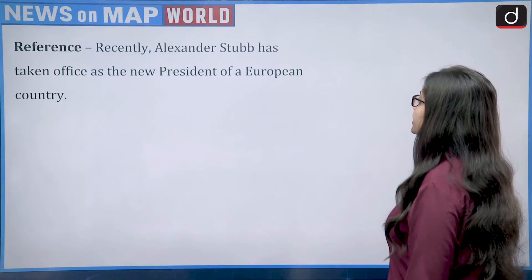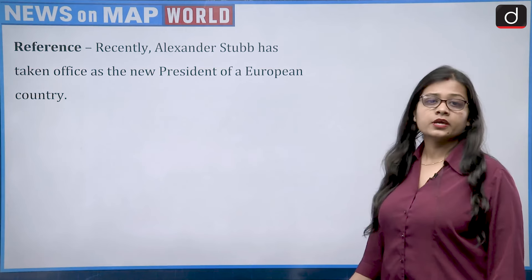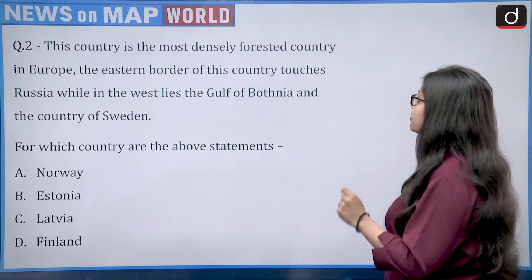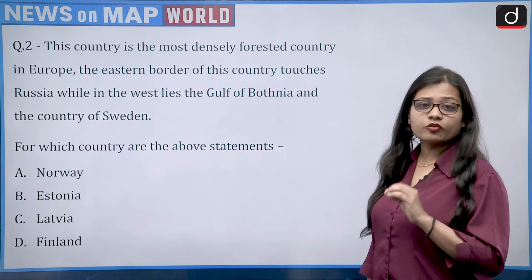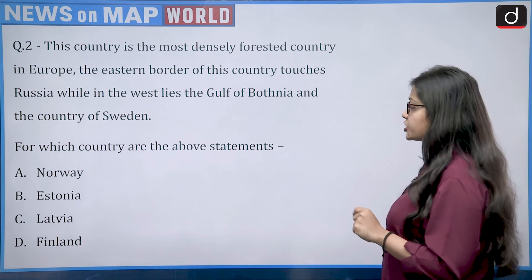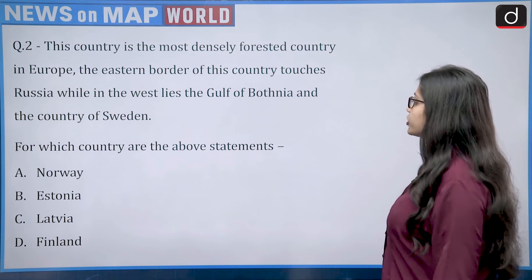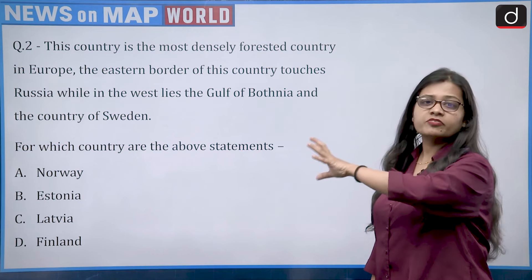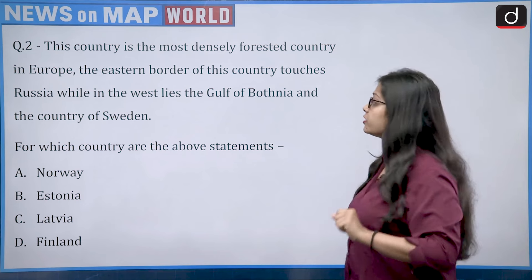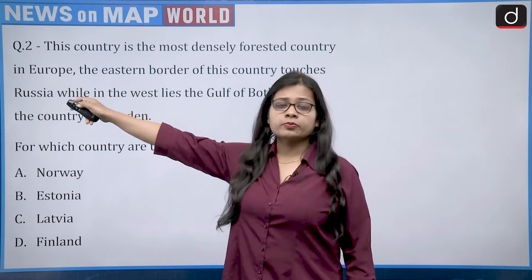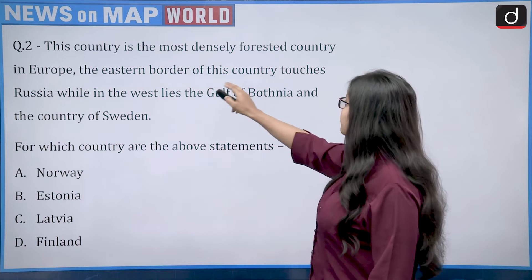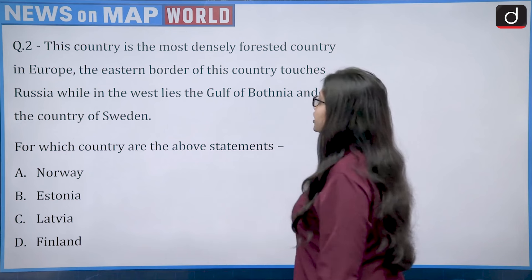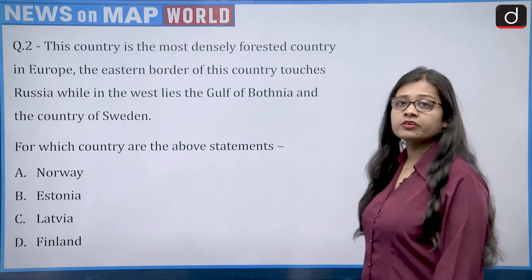The next reference is that Alexander Stubb recently took office as the new president of a European country. The question describes this country as the most densely forested country in Europe, whose eastern border touches Russia, while to the west lies the Gulf of Bothnia and Sweden. The options are Norway, Estonia, Latvia, or Finland.